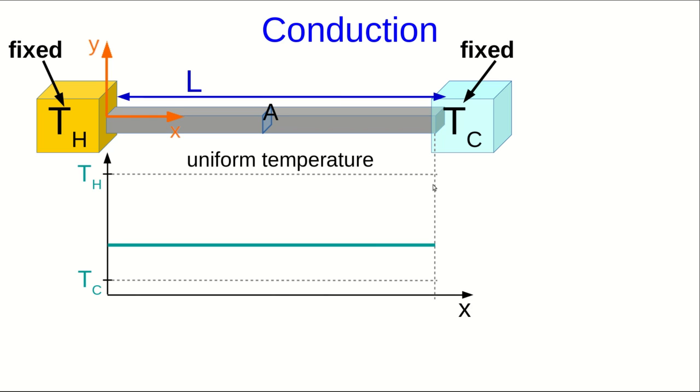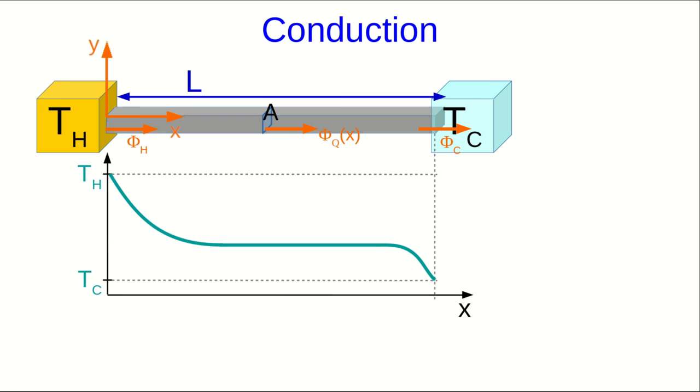What happens next to this bar connecting the hot object to the cold object is complicated, too complicated for us. It involves solving differential equations. But in general terms, what happens is that thermal energy is going to come in at one end and leave at the other. And in general, the heat flux is going to depend on where in the rod you look.